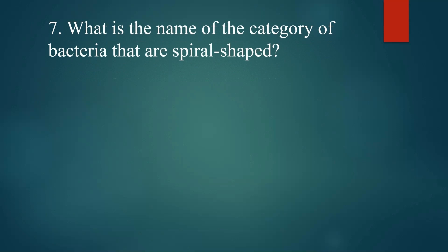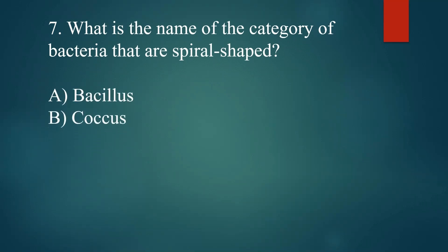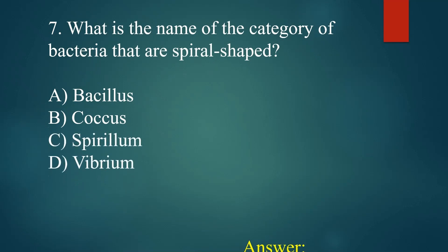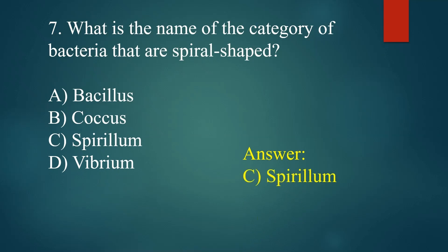What is the name of the category of bacteria that are spiral-shaped? A. Bacillus. B. Coccus. C. Spirillum. D. Vibrio. Answer: C. Spirillum.